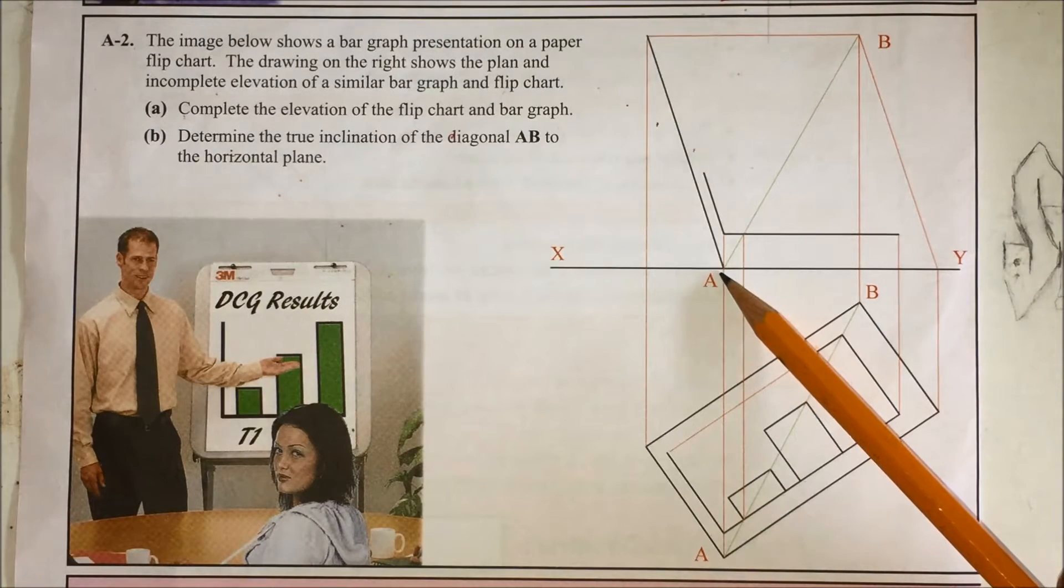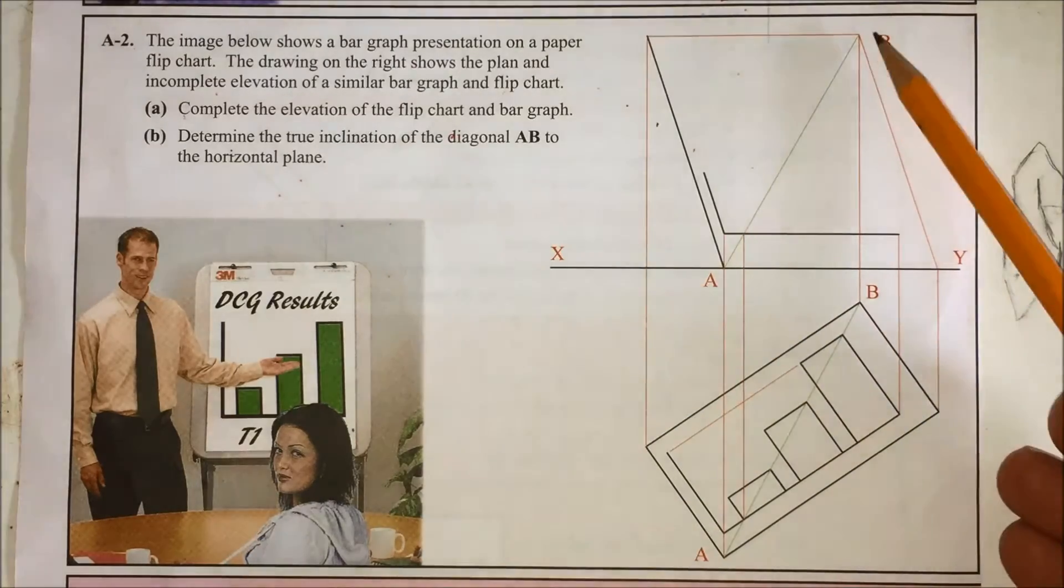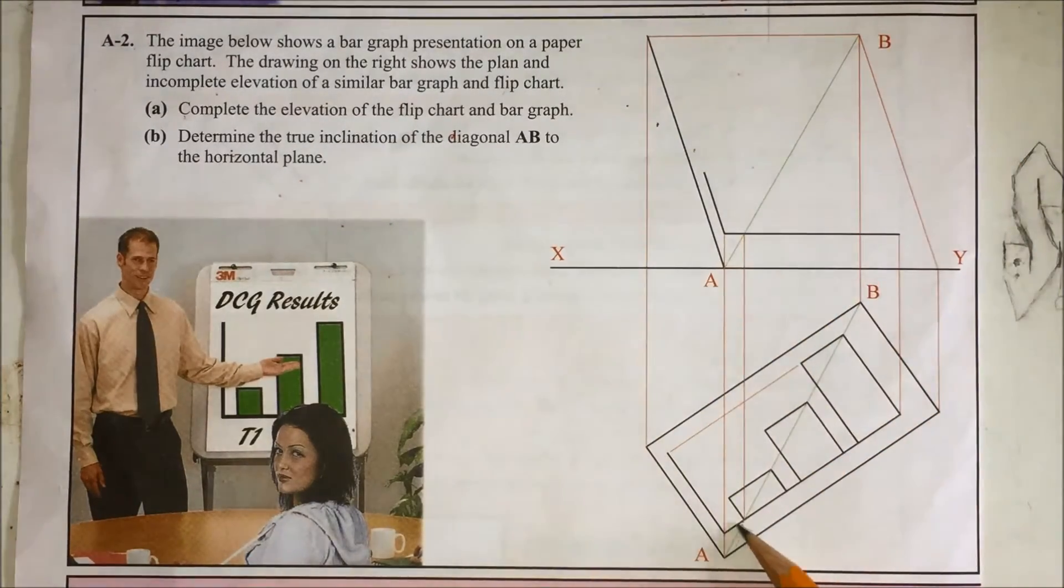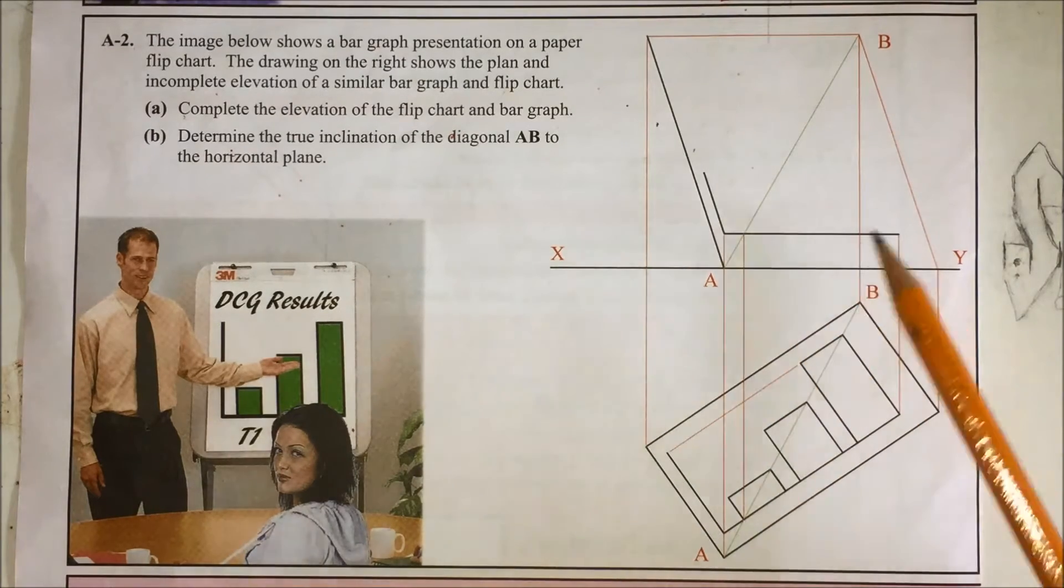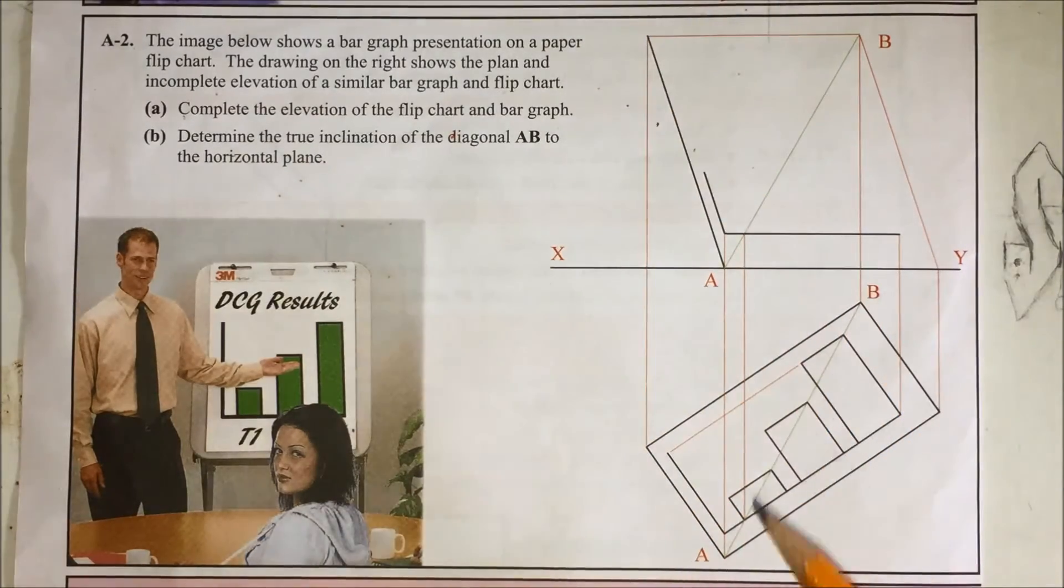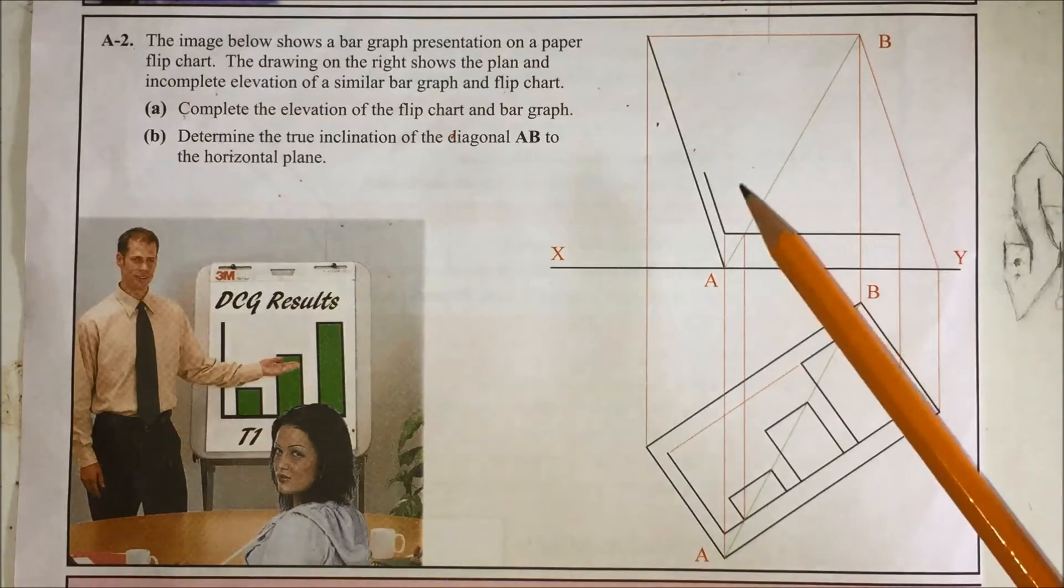So first things first, let's complete the elevation. We see here point A is given to you there on the XY line, point B at the top here, there's your diagonal. They're showing you that the horizontal lines here are parallel to XY line and that the vertical line here is parallel to the edge.